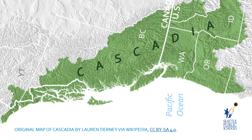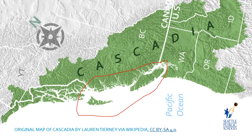Here is Cascadia. Remember, Cascadia goes up into the British Columbia area and even beyond. You can see where there is the Salish Sea, kind of right around this area, and Washington State is right there. I like this map because north is in a different direction — it is not at the top of the map like most conventional maps.